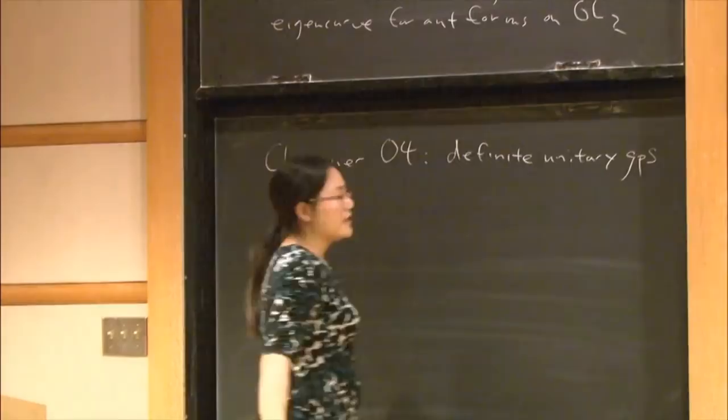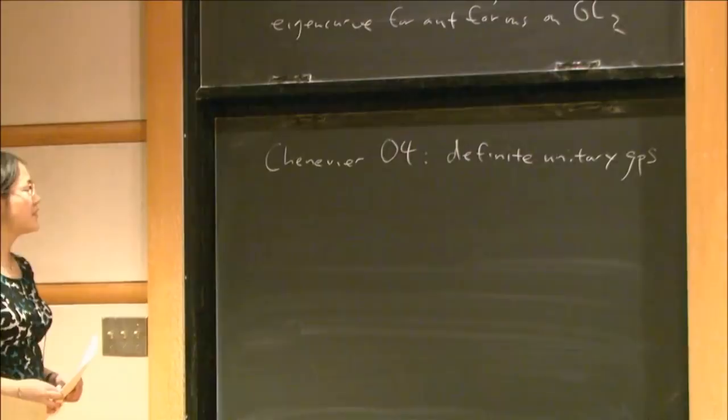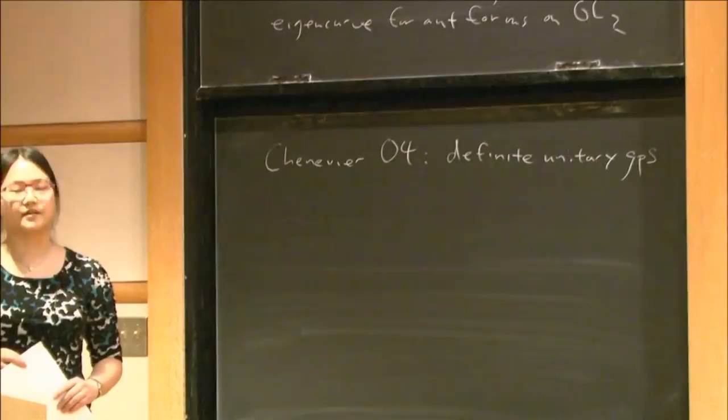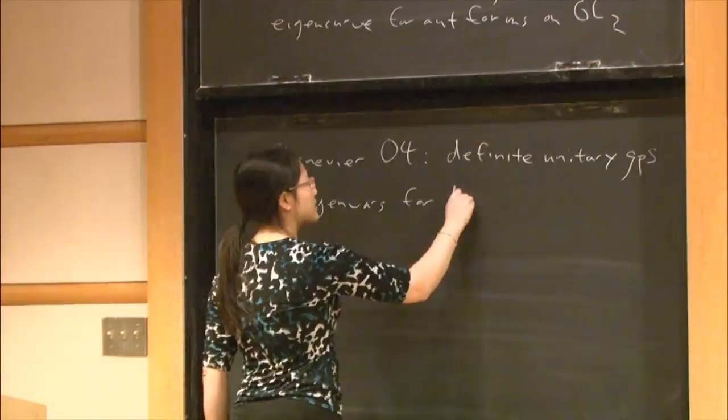I wanted to start by talking in more detail about what Chenevier's eigenvariety looks like, then state a structure theorem about the points on this eigenvariety, and talk a little bit about the proof. So let's start by looking at these eigenvarieties for definite unitary groups.